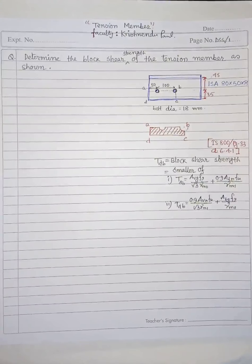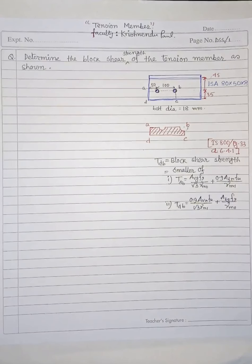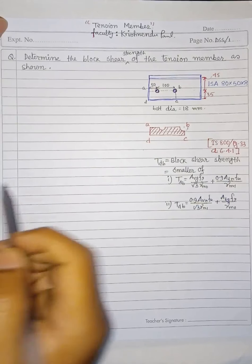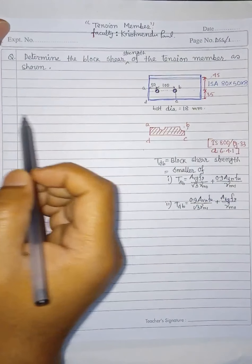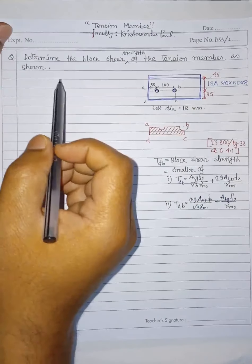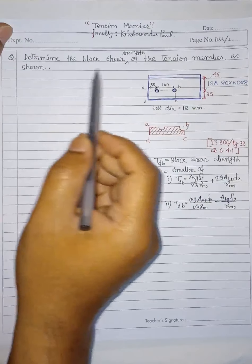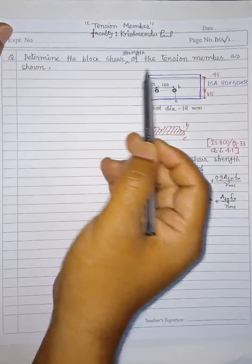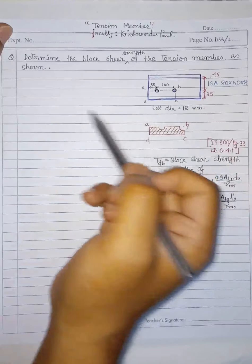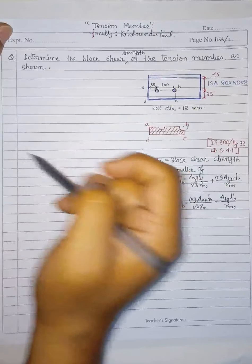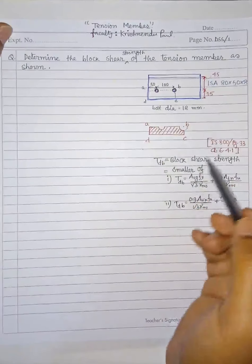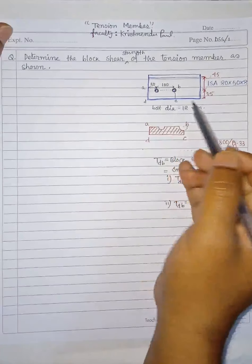Today we will solve a numerical from tension member. This question is from block shear strength. The question says: determine the block shear strength of the tension member as shown in the figure.